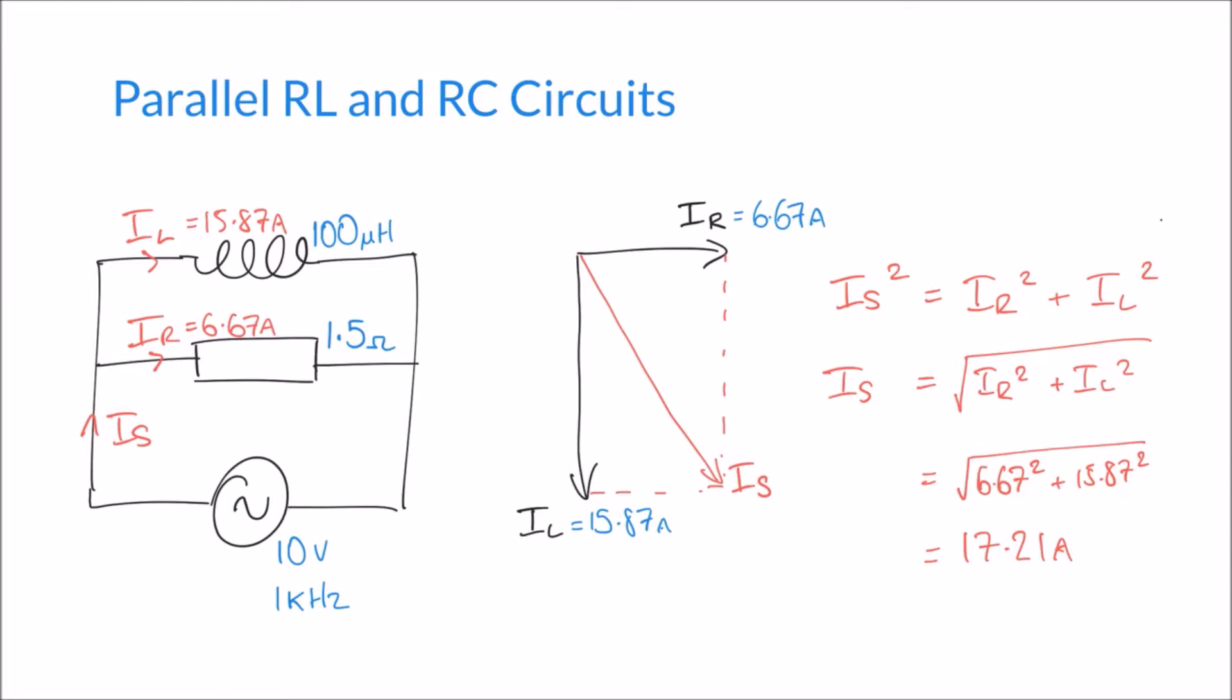So looking back to the scale of our diagram, and this was only an approximate rough sort of scale when I sketched it here, but we can see that that value kind of makes sense in terms of the scaling of our diagram. We'd expect that line to be a little bit longer than the IL arrow there, and so we're getting a value that reflects that.